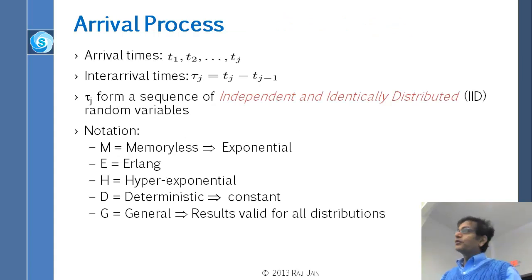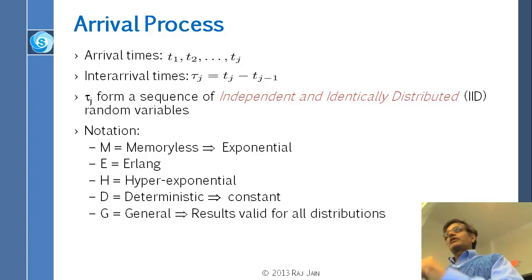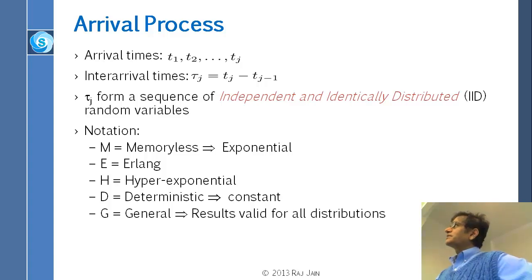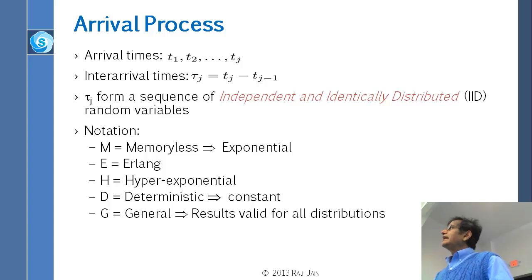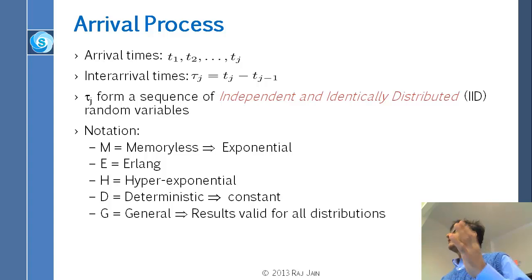We will go through each one by one. For arrival processes, you find out what is the distribution of inter-arrival times. You stand at the front and note the times — somebody came at 10 o'clock, somebody came at 10:35, so the inter-arrival time is 35 minutes. We note arrival times t1, t2, ..., tj, then tau_j = t_j minus t_{j-1} is the inter-arrival time. We assume for most queuing theory analysis that they are IID — independent and identically distributed.